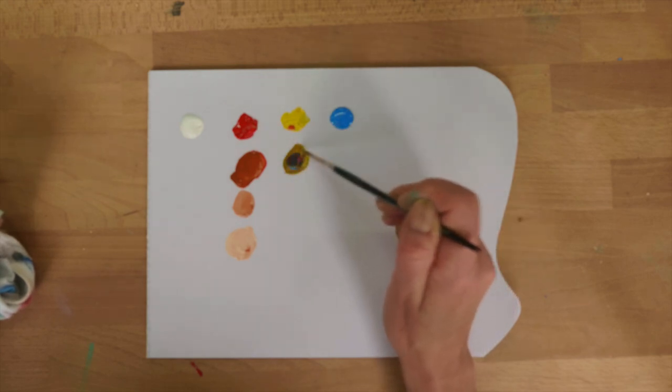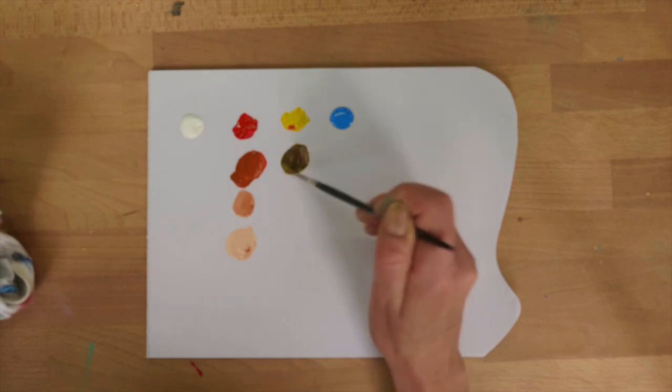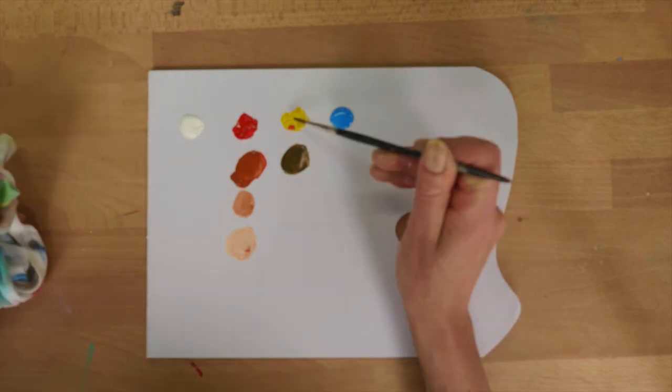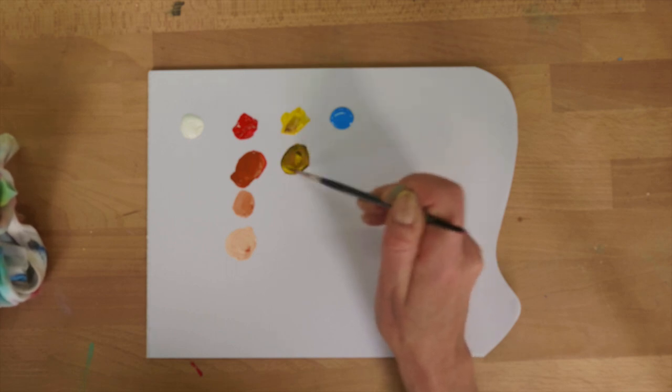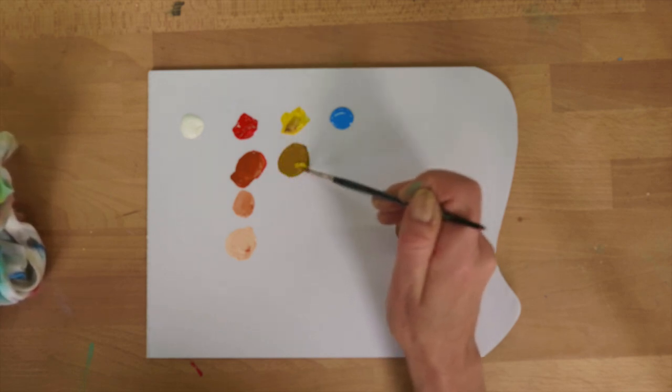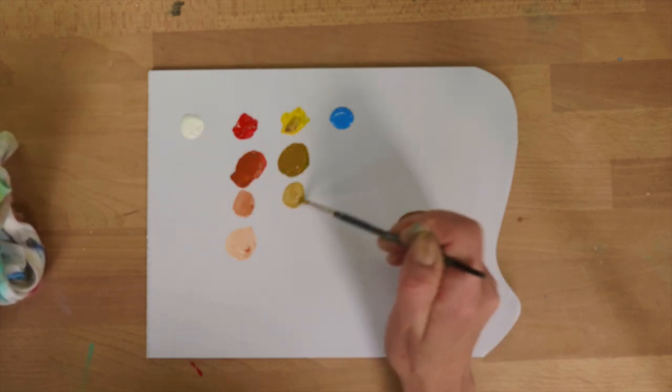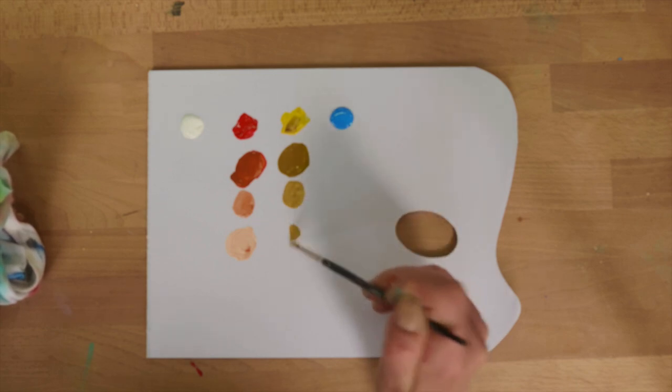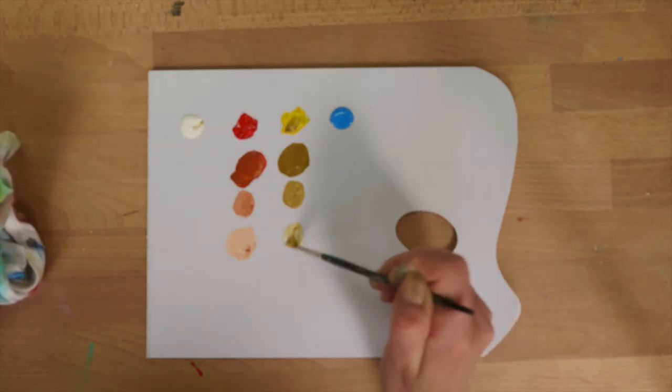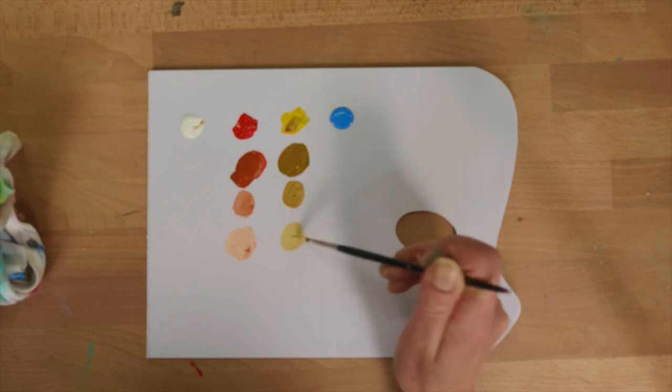I will actually mix up a bit more of that because I haven't got enough there to show you what I want to show you. Beautiful. So we've got a nice dirty yellow and then we'll just start adding some white so we get some really gorgeous colors going on. Oh my goodness, look at that, that's lovely.